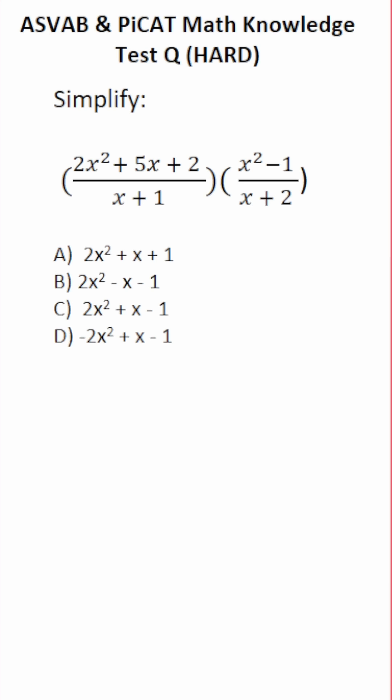In order to simplify rational expressions, you first factor whatever you can, and then you cross-reduce accordingly. So I'm going to rewrite this one like this to make it a little bit easier to see.